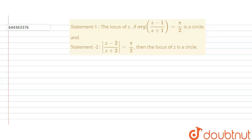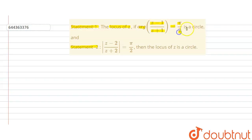Hello students. The problem has Statement 1 and 2 given. Statement 1 says: the locus of z, if the argument of (z minus 1) divided by (z plus 1) equals pi by 2, is a circle.